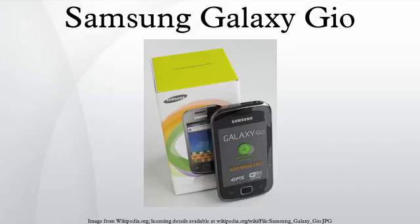The device has a 3.2-inch HVGA multi-touch capacitive touchscreen, a 3.2 megapixel camera with autofocus, and an 800 MHz Qualcomm MSM7227 processor, 278 MB RAM, 158 megabytes internal storage, 3G HSPA Plus, FM radio, GPS, Wi-Fi 802.11 b/n, and a 1350 mAh battery.